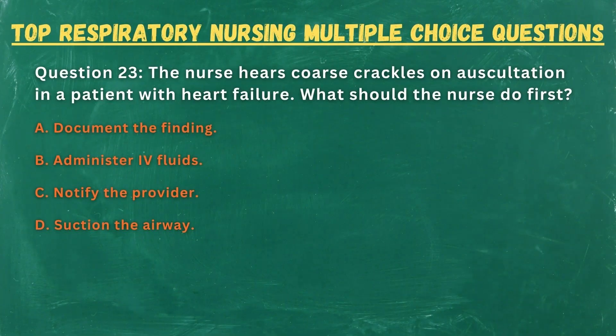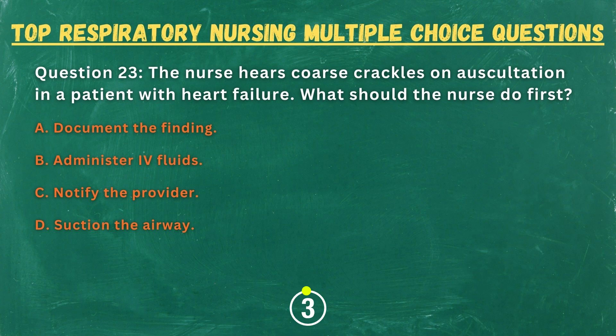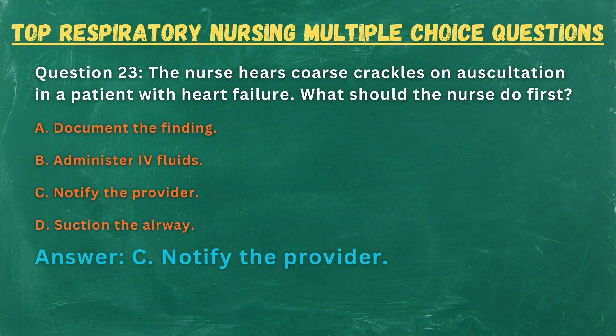Question 23. The nurse hears coarse crackles on auscultation in a patient with heart failure. What should the nurse do first? A. Document the finding. B. Administer fluids. C. Notify the provider. D. Suction the airway. Answer: C. Notify the provider.